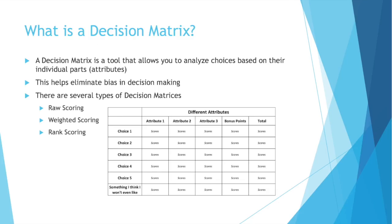What is a Decision Matrix? A Decision Matrix is a tool that allows you to analyze different choices based on their individual parts. We call these parts attributes. This helps eliminate bias in decision making, because you score each thing based on multiple criteria — you just don't make a quick, rash decision.